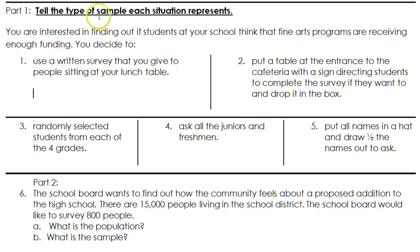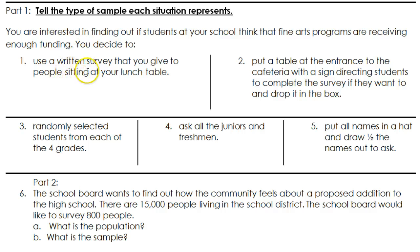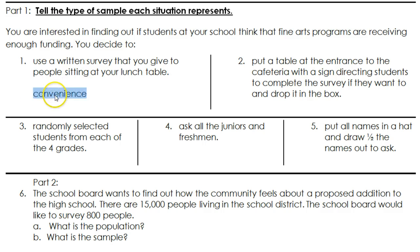Let's identify the type of sample each situation represents. You're interested in finding out if students at your school think that fine arts programs are receiving enough funding. Option one: you use a written survey that you give to people sitting at your lunch table. That is going to be a convenience sample, because you just pick the group that happens to be at your lunch table.